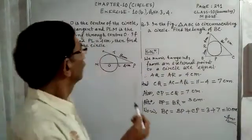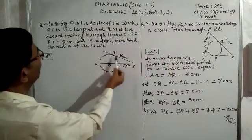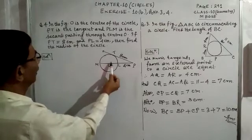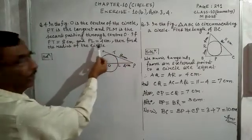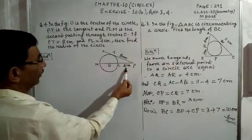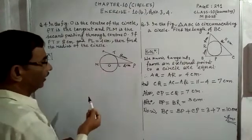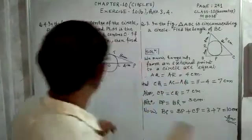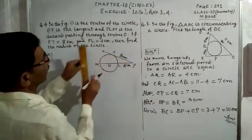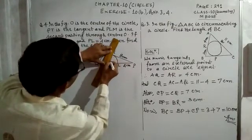Moving to question number 4. In the figure, O is the center of the circle, PT is the tangent, and PLM is the secant passing through the center O. PT is equal to 8 cm and PL is equal to 4 cm. We have to find the radius of the circle. To do so, let us join OT to get the radius.